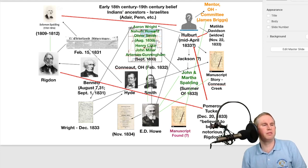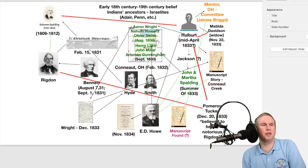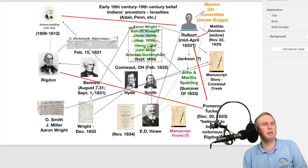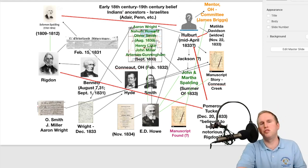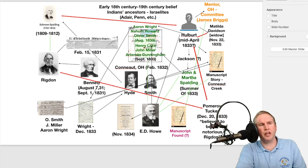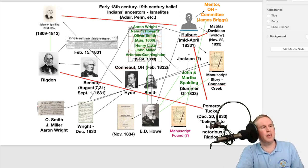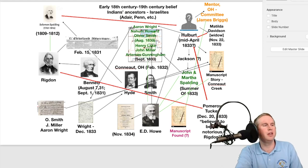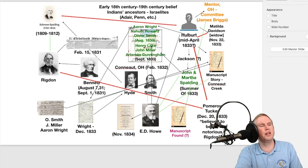The question of what happened to Manuscript Found remains an enigma. However, in 1884, when the first manuscript was discovered in Honolulu, Hawaii, they found an endorsement on it confirming these are the writings of Solomon Spalding. It had the names Oliver Smith, John Miller, and Aaron Wright on it, making it obvious that Holbert had indeed visited Oliver Smith and John Miller as well.